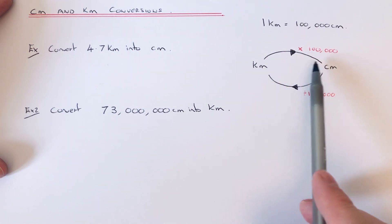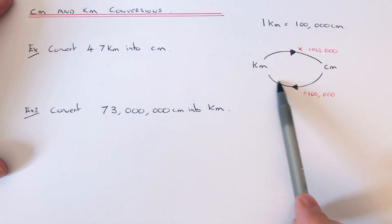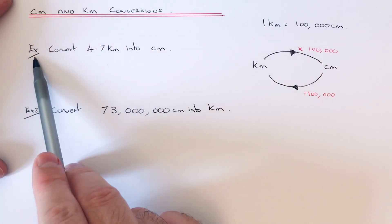If you're converting kilometers into centimeters, you'll have to multiply the number by 100,000. And if you're converting back from centimeters to kilometers, divide by 100,000. So let's have a look at the two examples here.